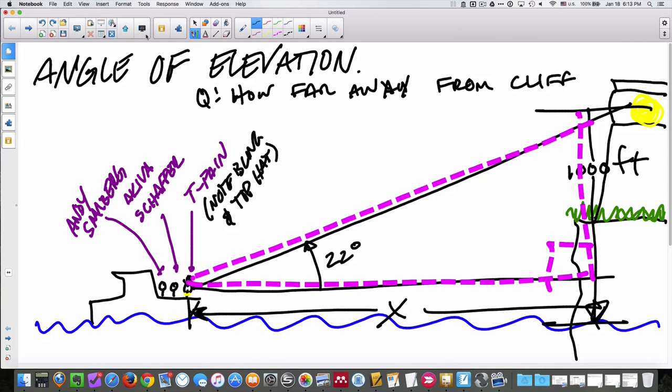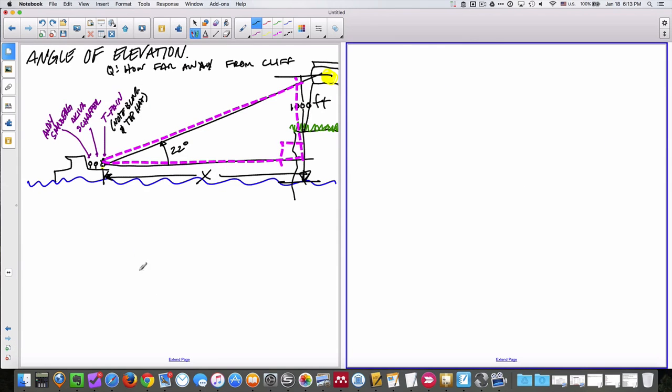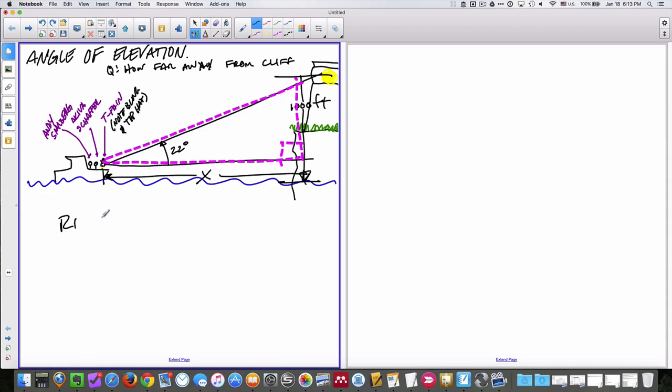So how would we figure that out? Let's go to split screen. We have another page. And let's go figure that out. So it's really just right triangle trig. And so we're going to use a trig ratio, sine, cosine, or tangent of theta.